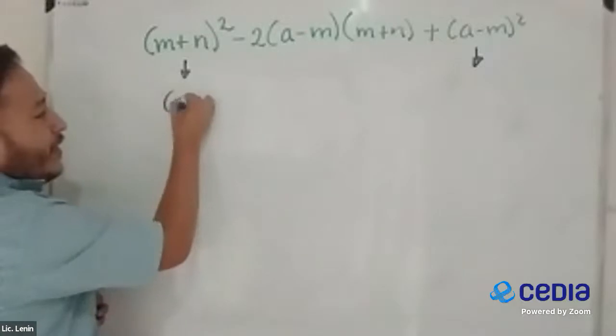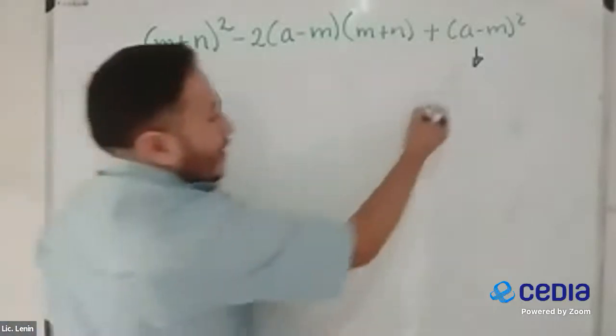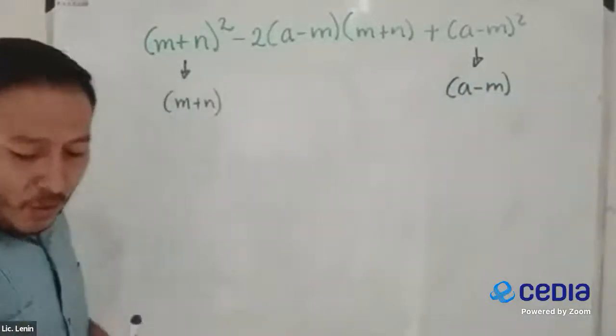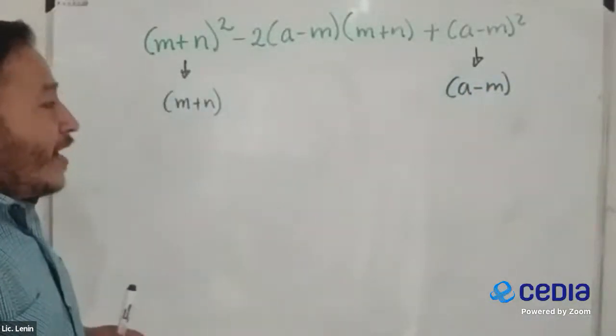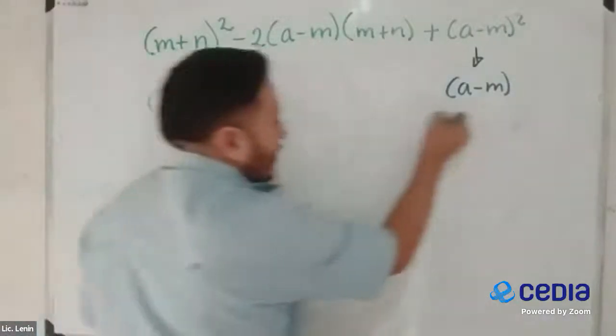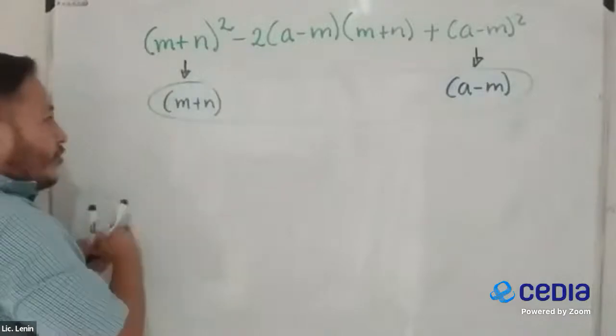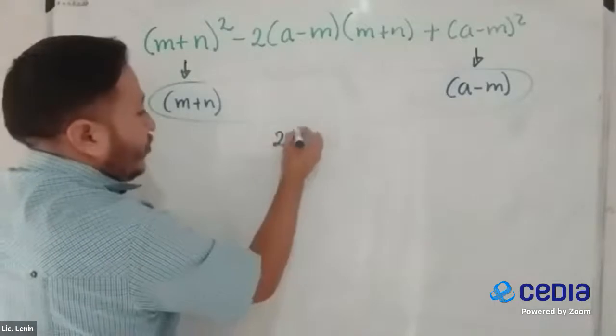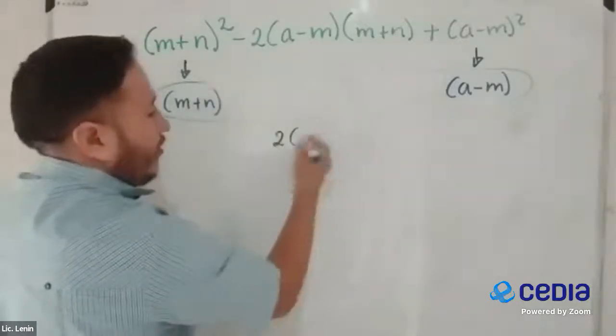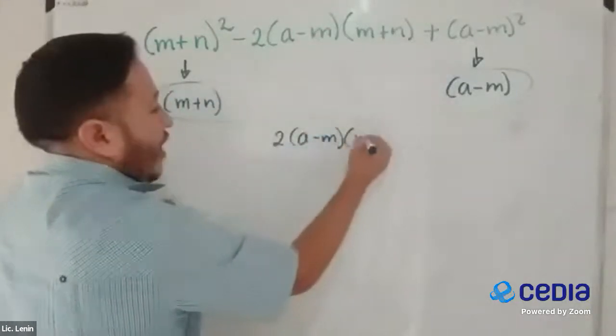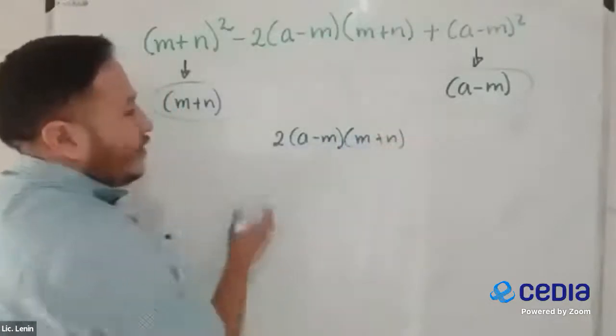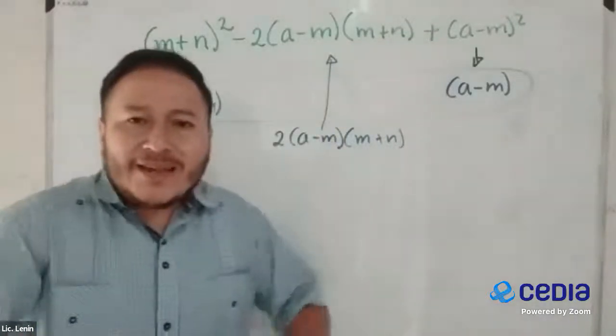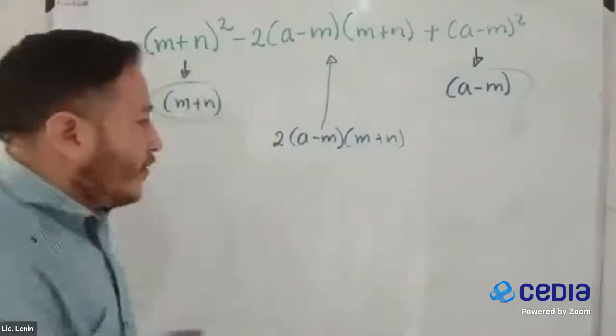Que nos quedaría m más n y acá nos quedaría a menos m. Una vez que ya hayamos sacado esas raíces, vamos a multiplicar por 2. Y nos quedaría 2, a menos m, a más n. Y nos está saliendo lo mismo que tenemos en la mitad. Lo que nos indica que sí es un trinomio cuadrado perfecto.